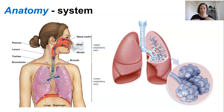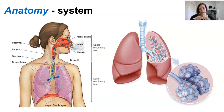There are two lungs, one on each side of your body — we call them the left and right lungs — and they are filled with tiny little air sacs called alveoli, which are little chambers where the gas exchange occurs with the tiny capillaries.